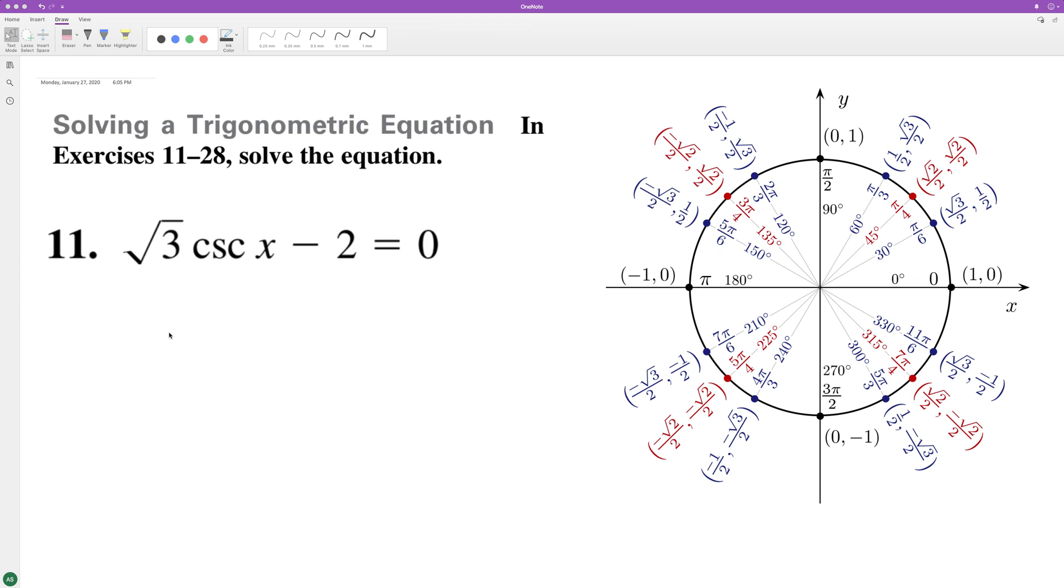Starting off with this problem, we'll add 2 to both sides. To make this easier, I'm going to rewrite cosecant as 1 over sine x, and then divide through by root 3, so 1 over sine equals 2 over root 3.